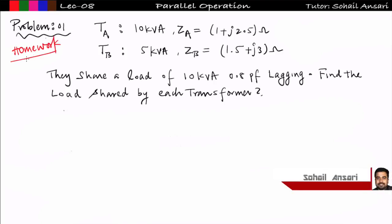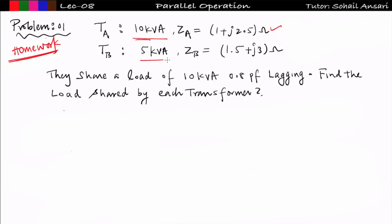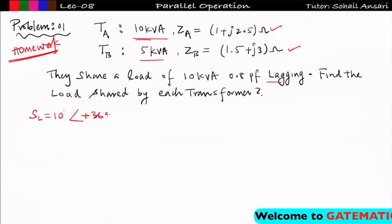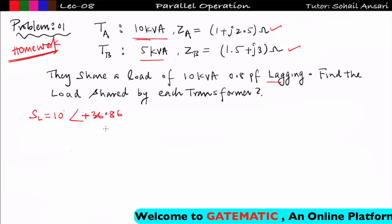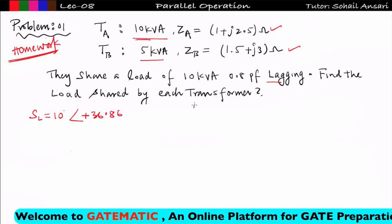Now see the first problem I gave as homework. Transformer A has a 10 kVA rating and impedance Za given in ohms. Transformer B has a 5 kVA rating and Zb given in ohms. A load of 10 kVA at 0.8 power factor lagging is given, so Sl = 10 at an angle of +36.86°, because for lagging load the angle of Sl is positive and for leading load it is negative. You can refer to lecture 22 of network theory on power calculation in AC circuits for more detail.